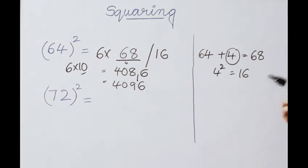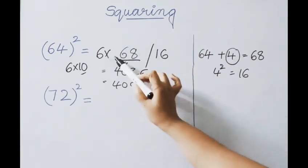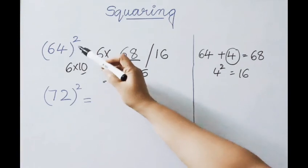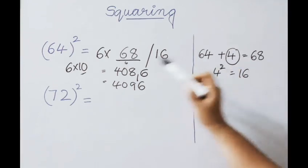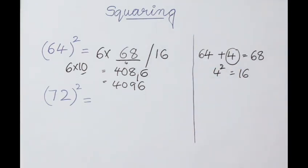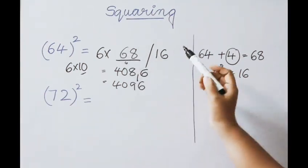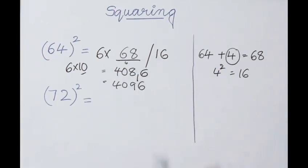To confirm: 64 equals 6 times 10, so we multiply the first part by 6. Excess above 60 is 4; 64 plus 4 is 68 (first part). 4 squared is 16 (second part). 6 times 68 is 408. Since base is related to 10, one digit is allowed; carry the 1. After adding we get 4096. So 64 squared is 4096.